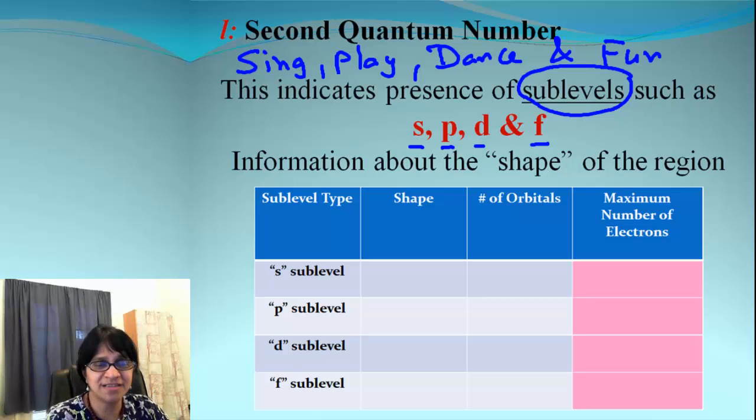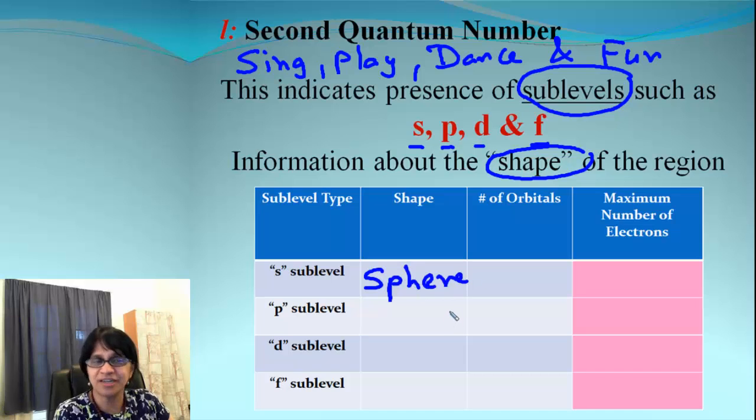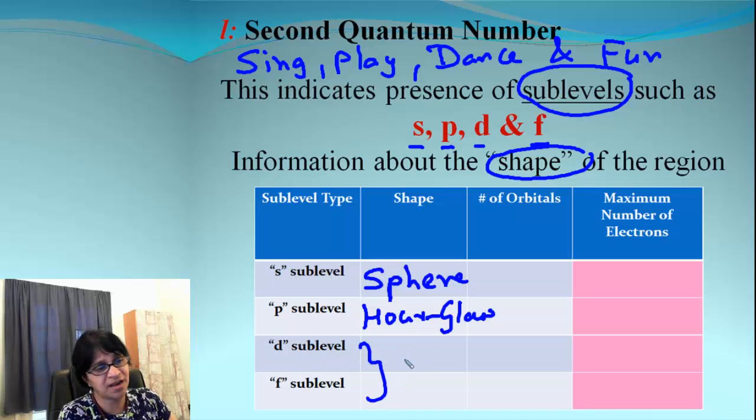Each of the orbital has different shape. So it also gives you some information about the shape of the region. So what shape S sub level has? It is like a sphere. So spherical shape. P sub level looks like an hourglass or you can think about like a dumbbell shaped. And both d and f they are complex shape and we won't learn much about that at this level.